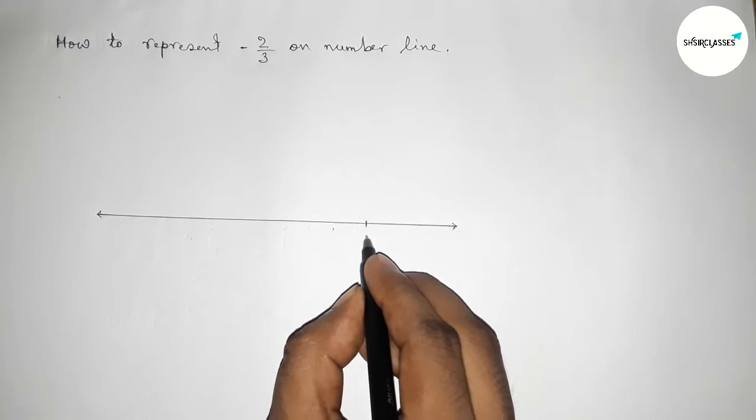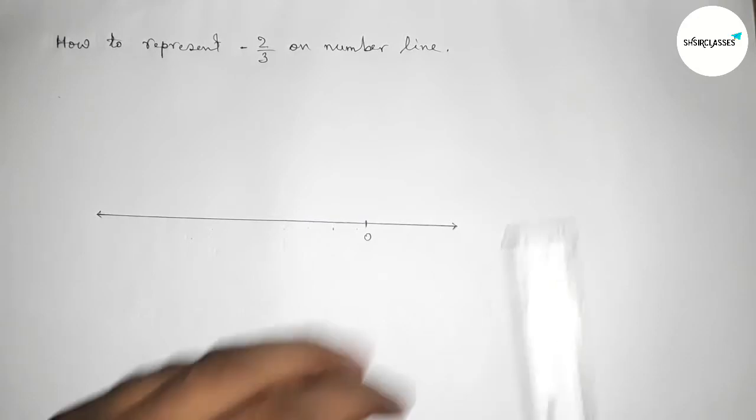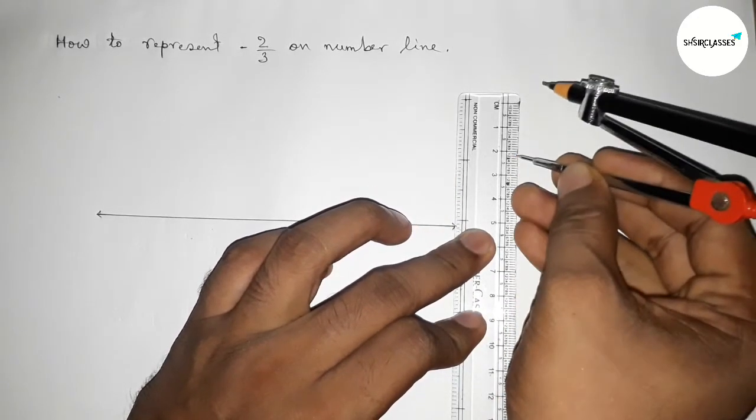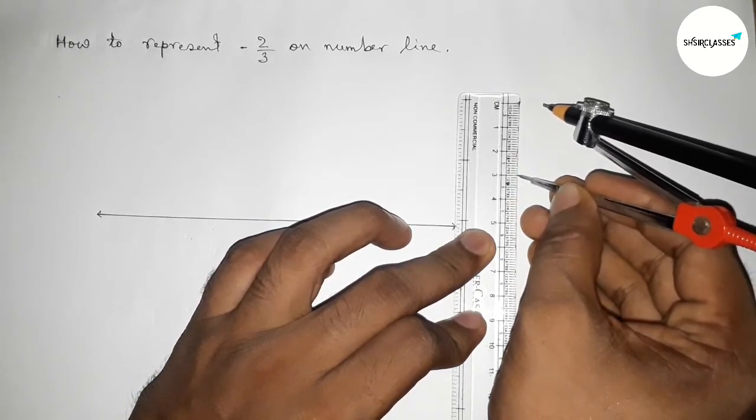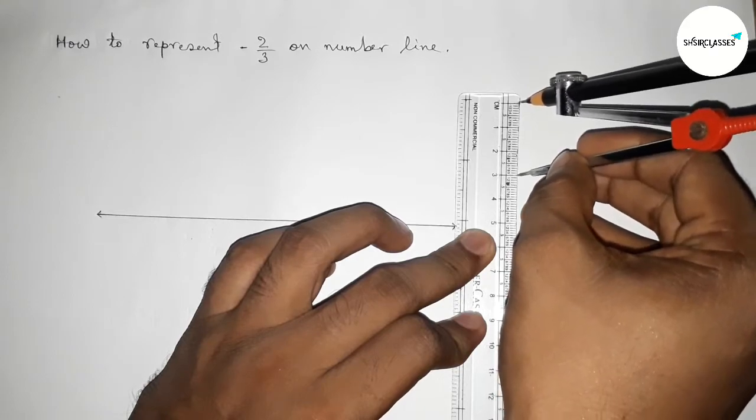Now for easy calculation here, I'm going to use scale and taking a length by using compass, and the length 3 centimeter. You can take any length, but for easy calculation here I am taking 3 centimeter length by using compass.